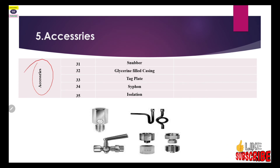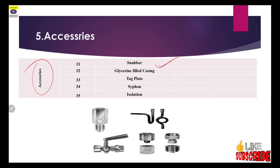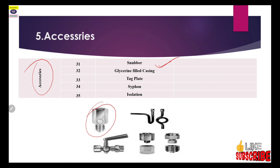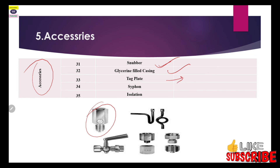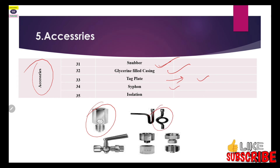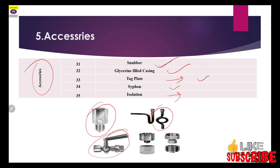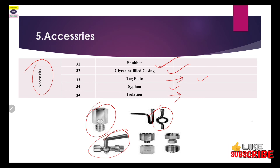Some accessories are also used. The snubber is used when your pump has some pressure fluctuation. You can also use glycerin-filled casing. A tag plate is provided for the tag number of the pressure gauge. A siphon is generally used in steam service. Isolation valves are also used for isolating the pressure gauge from the process line.